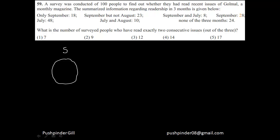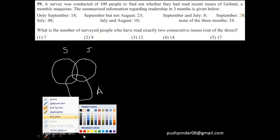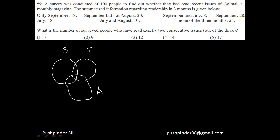This area denotes September, this area here denotes July, and this area here denotes August. Now let's try filling all the areas. Let me change my pen so I can go ahead and solve.